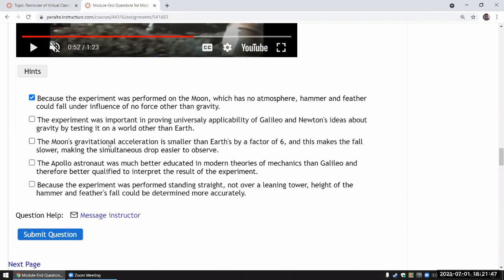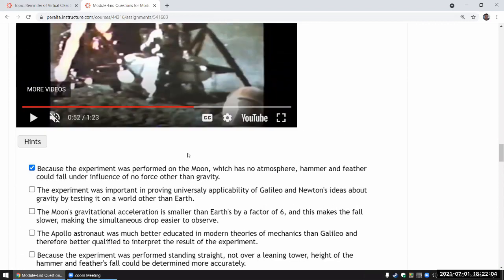The moon's gravitational acceleration is smaller than Earth's by a factor of six. I think if you read through the textbook section, that is right. And this makes the force slower, making the simultaneous drop easier to observe. Yeah, that sounds correct.